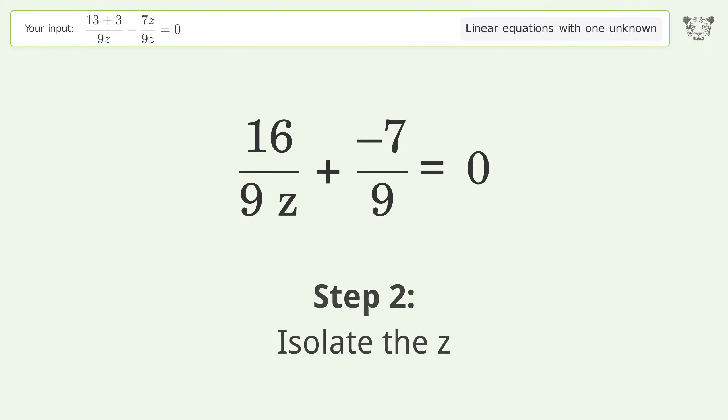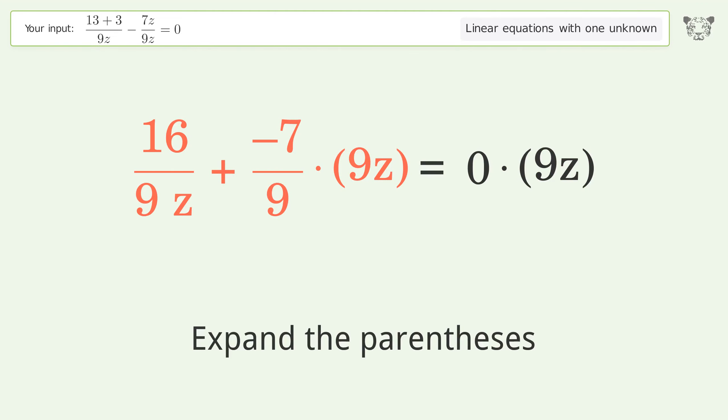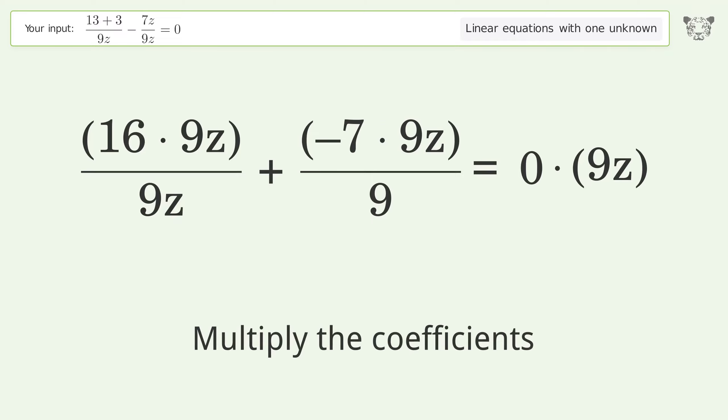Isolate the z. Multiply both sides by 9z. Expand the parentheses. Multiply the coefficients.